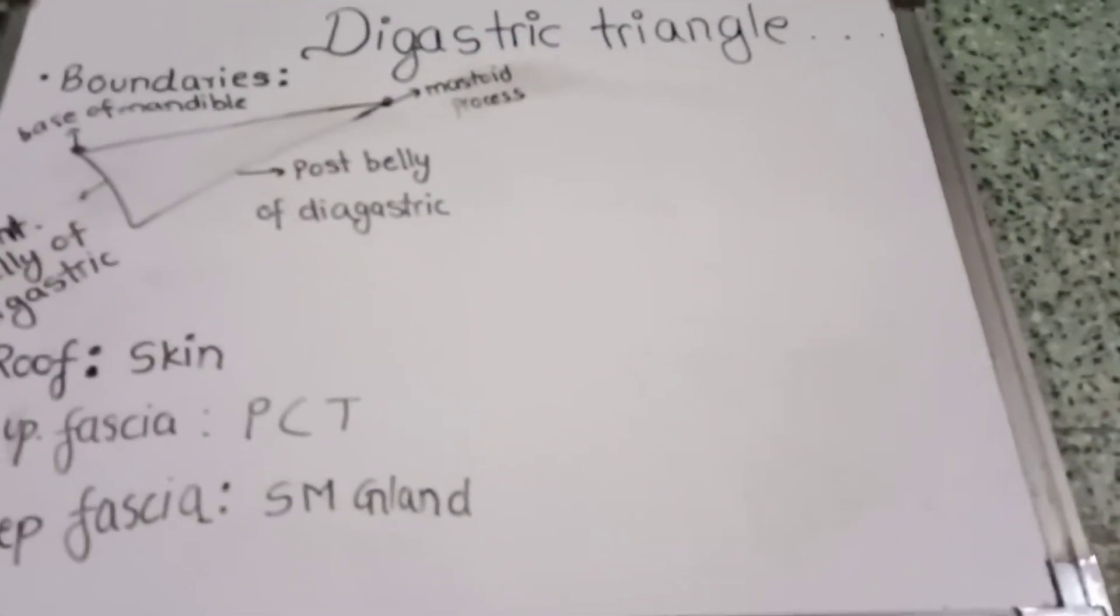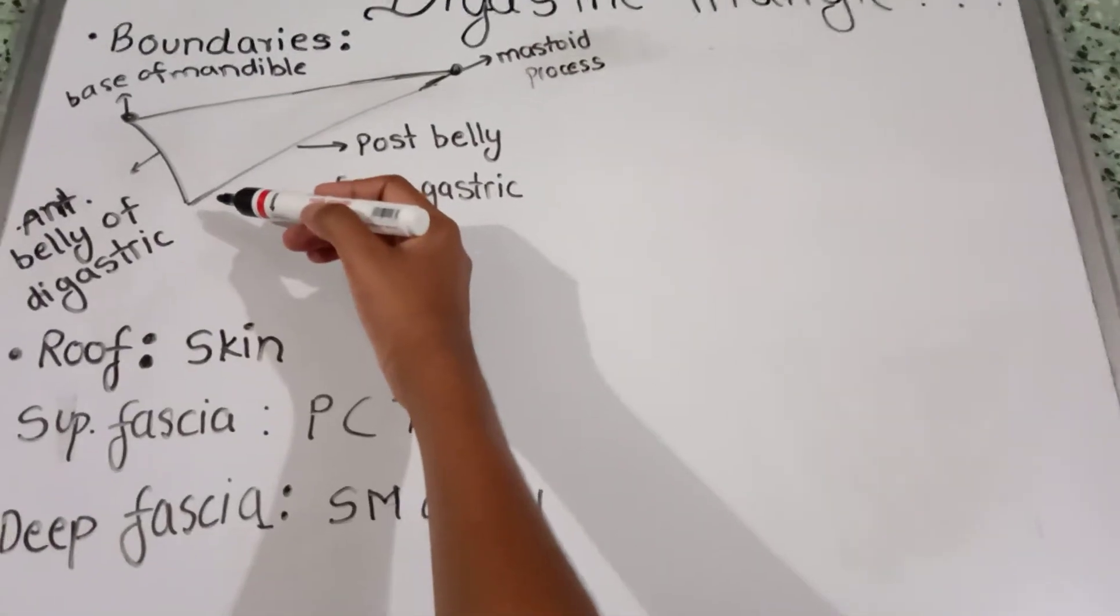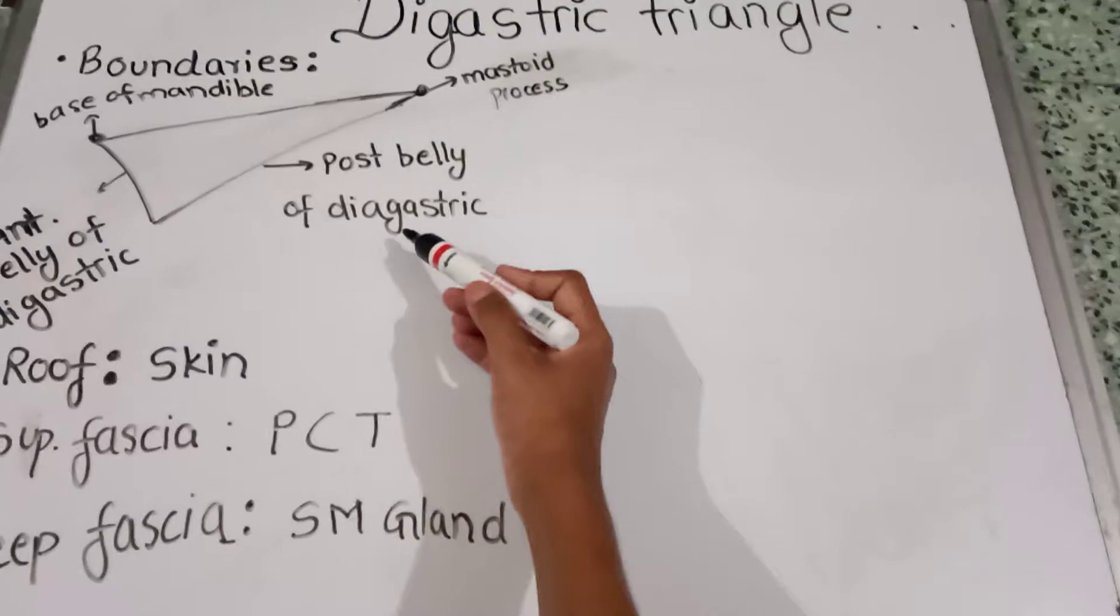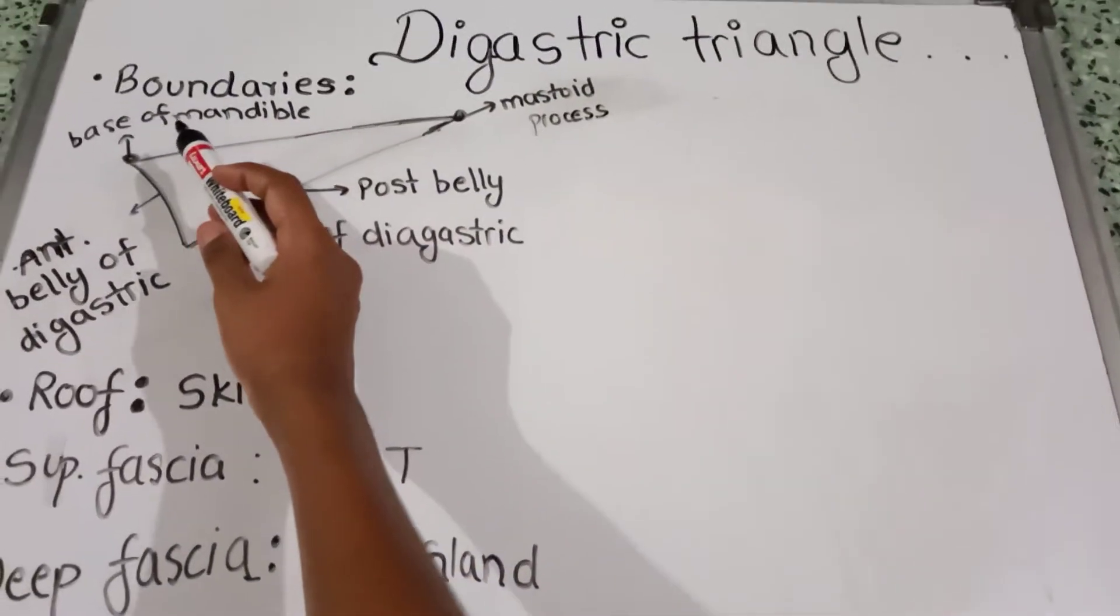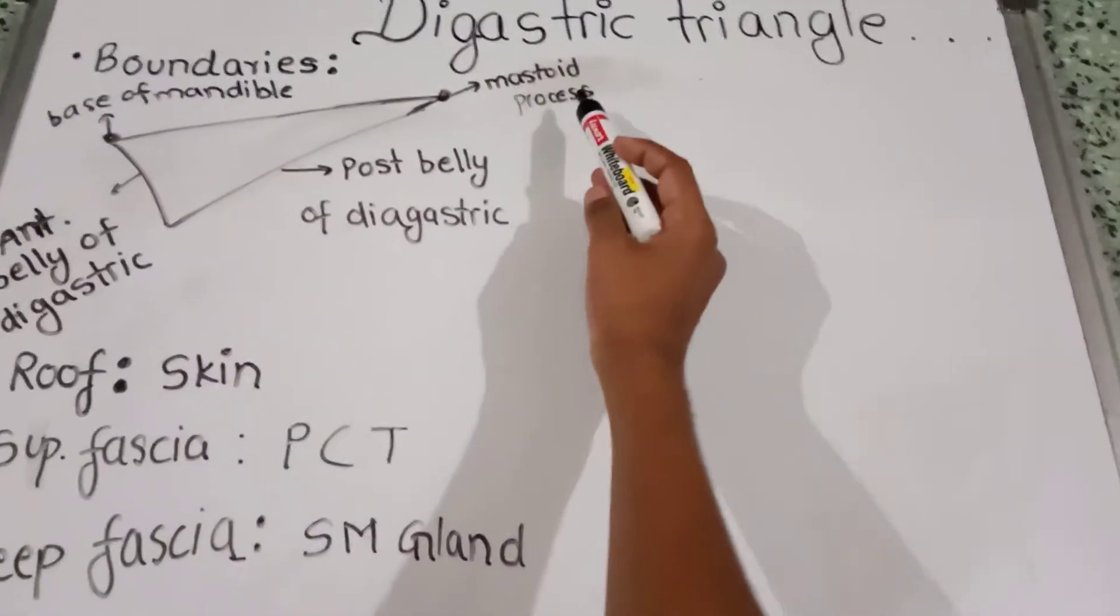Digastric Triangle Boundaries: Anterior inferiorly, it is the anterior belly of the digastric. Posterior inferiorly, the posterior belly of the digastric. Superiorly, it is formed by the base of the mandible, the line joining the angle of the mandible to the mastoid process.